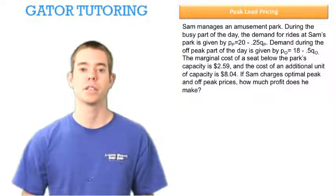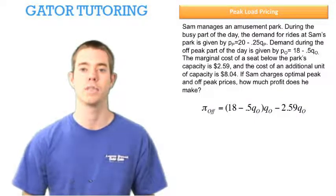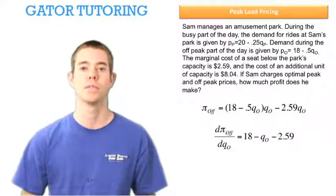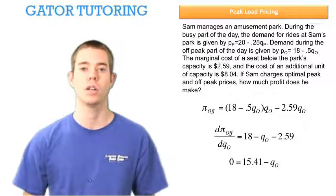We can do the same process with respect to off peak except now notice there is no $8.04, just the $2.59 of the cost of a seat below the park's capacity. We take this derivative, we set it equal to zero, and we can solve for our quantity in off peak to equal 15.41.